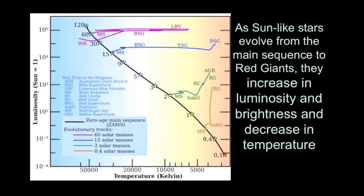We can also depict this change on the HR diagram. The main sequence is shown as a bold diagonal line, with star symbols representing main sequence stars of different masses — one solar mass for our Sun, then two, five, nine, thirty solar masses, and so on. The colored lines on the diagram represent the property tracks of stars of different masses after they finish their main sequence lifetime.